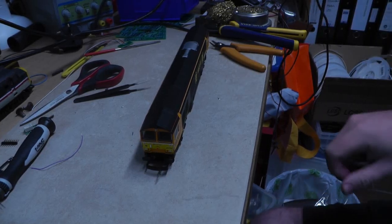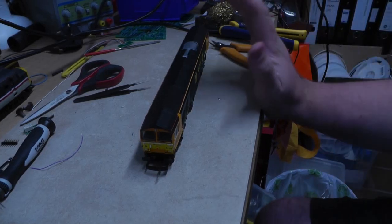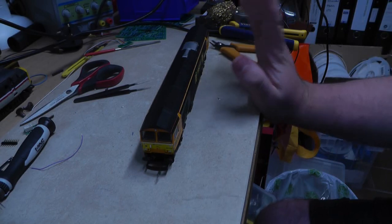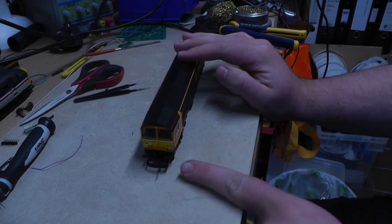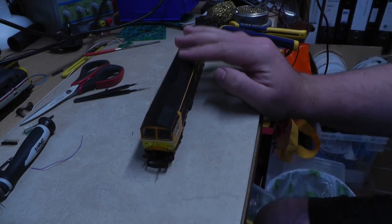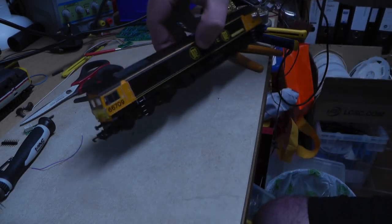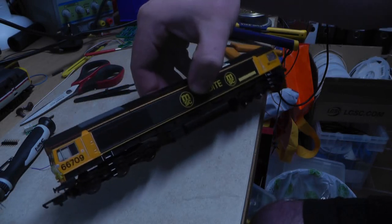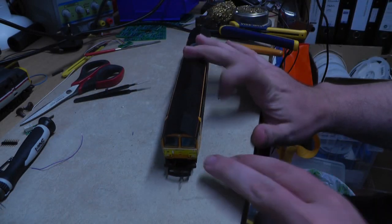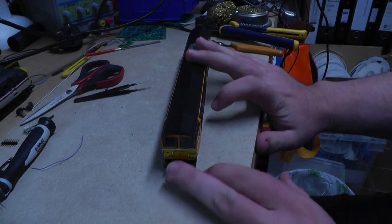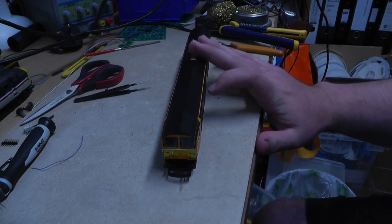Right then, welcome back guys, this is another video that we're going to do. This time we're going to be putting directional lights in, so that's whites and rears in this Hornby Class 66. This model itself is a few years old, but obviously Hornby being Hornby, they haven't changed their loco design that much.